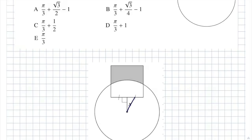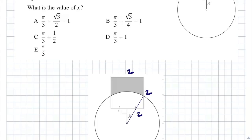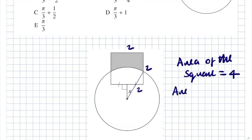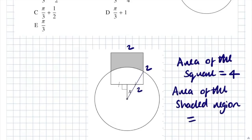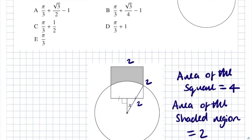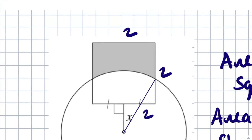The radius is 2, the square has side length 2, so the total area of the square = 2 × 2 = 4. The area of the shaded region = 2. The distance from the centre of the circle to the side of the square is x. Let's zoom in and form an equation in terms of x for the area of the square.